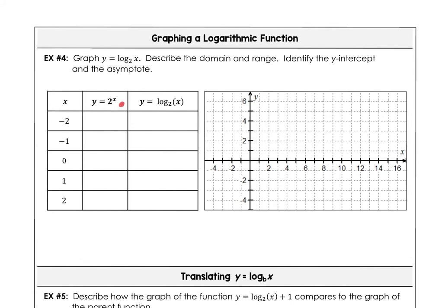Now we'll graph the parent function in red and the translated inverse in blue. We build a table: 2 to the negative 2 is one fourth, 2 to the negative 1 is one half, 2 to the 0 is 1, 2 to the first is 2, 2 to the second is 4. At the beginning of the lesson we said a logarithm is an inverse of an exponential function. Graphing the red exponential y equals 2 to the x, we get points (negative 2, one fourth), (negative 1, one half), (0, 1), (1, 2), (2, 4), with a y-intercept of (0, 1).